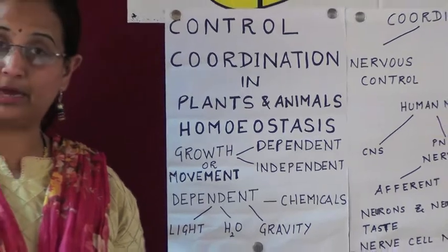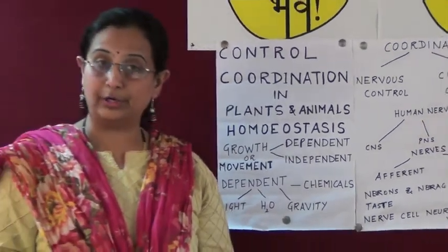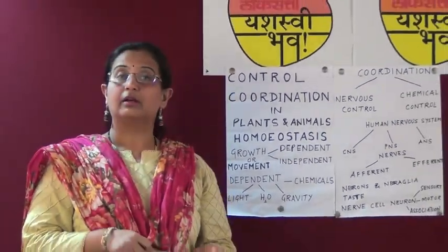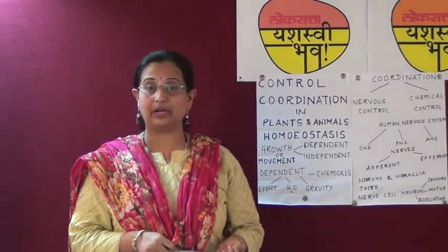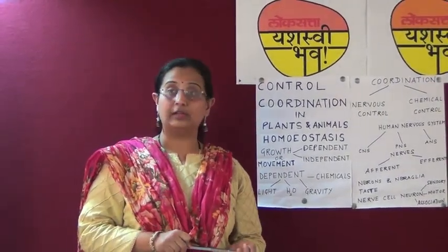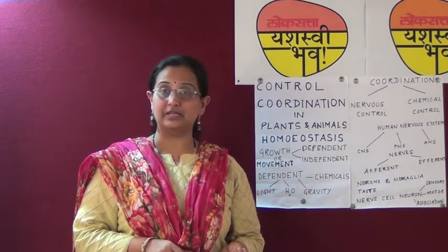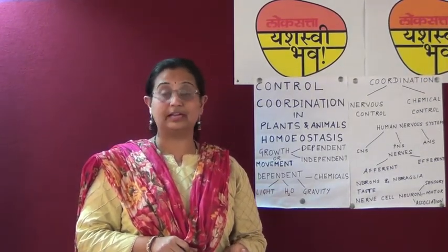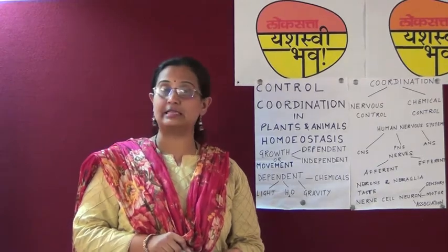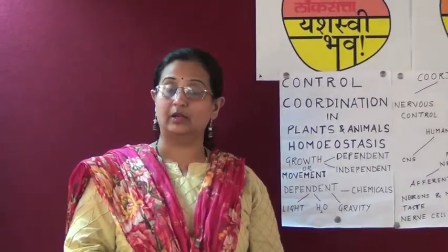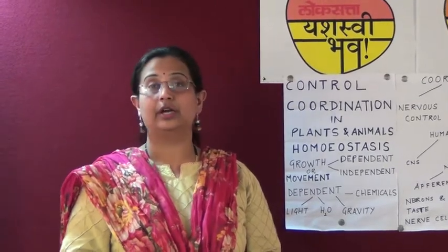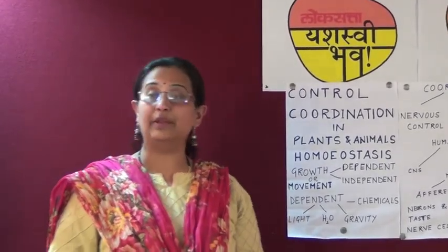Let us now understand what is phototropism. When a potted plant is placed near a window where sunlight is entering, sunlight falls on the leaves of the plant. It is observed that the plant slightly bends towards light. The auxin — that is a plant hormone which is present at the tip of the shoot — helps in the growth of the cell. The auxin gets diffused into the cellular tissues and brings about this movement. This is called phototropic movement.